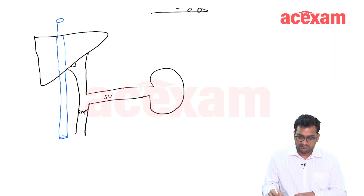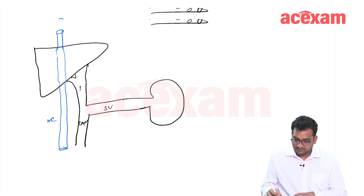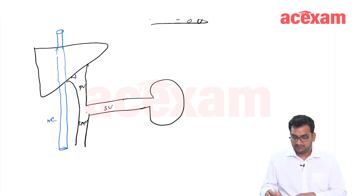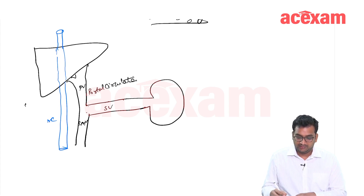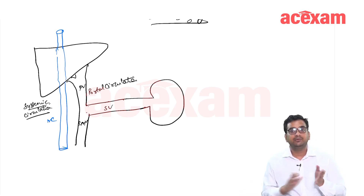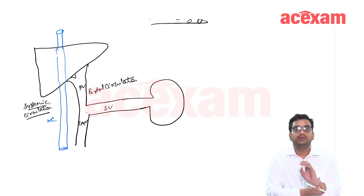This is the SVC. This is the IVC, and this is the portal vein. This black one is the portal circulation, and the blue one is the systemic circulation. The normal portal circulation pressure is 5 to 10. In portal hypertension, there is more pressure in the portal system.